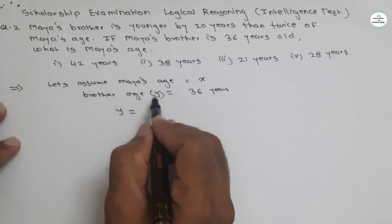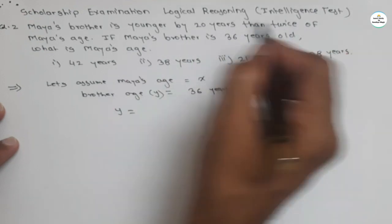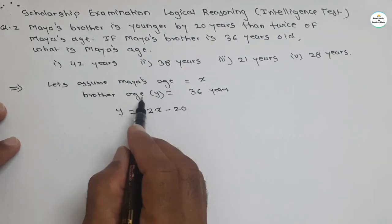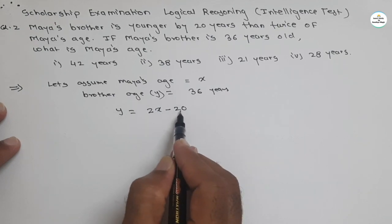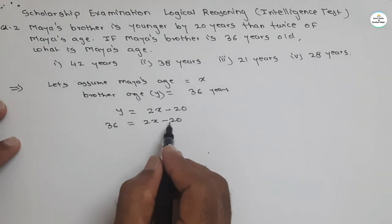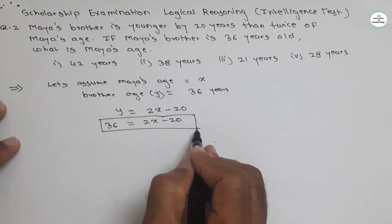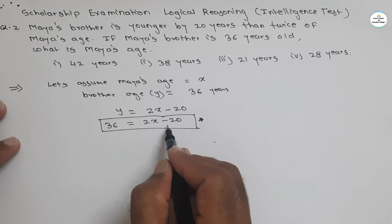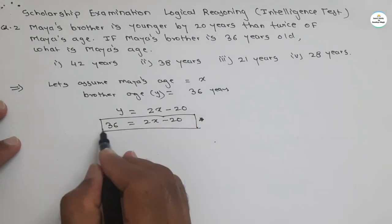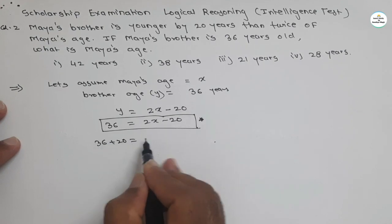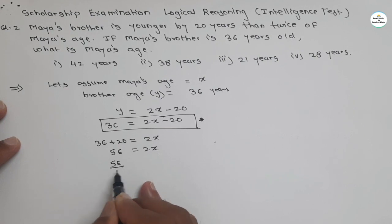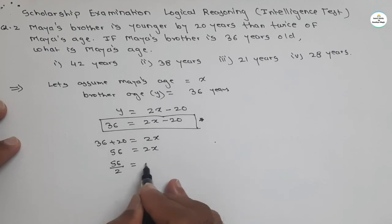If we consider brother's age as y, the equation will be: y = 2x − 20, because the brother is younger by 20 years than twice Maya's age. We know y = 36, so 36 = 2x − 20. This equation is very important to derive. Transfer 20 to the other side: 36 + 20 = 2x, so 56 = 2x.